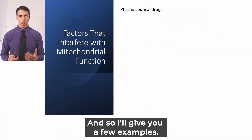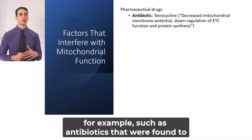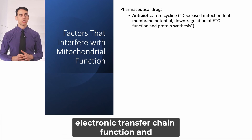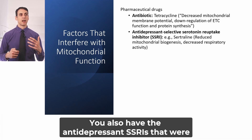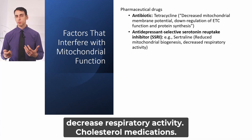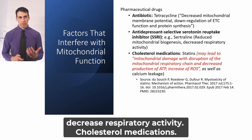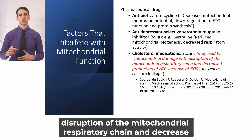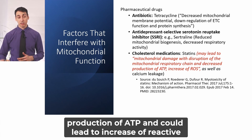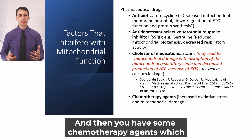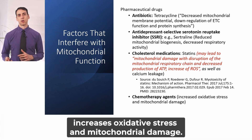There are several pharmaceutical drugs that interfere with mitochondrial function. Antibiotics were found to decrease mitochondrial membrane potential, down-regulate the electron transfer chain function, and inhibit protein synthesis. Antidepressants — SSRIs — were reported to reduce mitochondrial biogenesis and decrease respiratory activity. Cholesterol medications such as statins may lead to mitochondrial damage with disruption of the mitochondrial respiratory chain, decreased production of ATP, increased reactive oxygen species, and calcium leakage. Chemotherapy agents increase oxidative stress and mitochondrial damage.